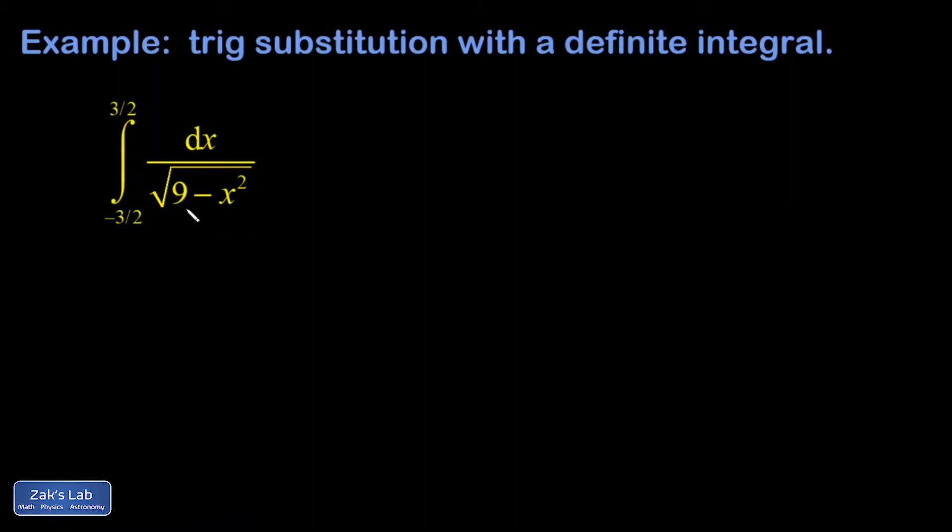I noticed that I have a constant minus a variable thing squared, so the idea here is to use this Pythagorean identity, manipulate it a little bit, and now I have a constant minus a variable thing squared. There is a 9 in here, but if I just tack on a 3 to my substitution before I square it, then I'm going to be able to factor that out. So let's go ahead and do our trig sub.